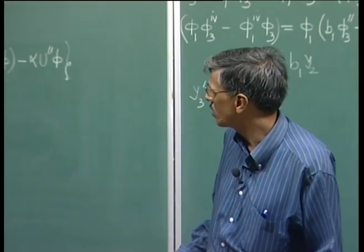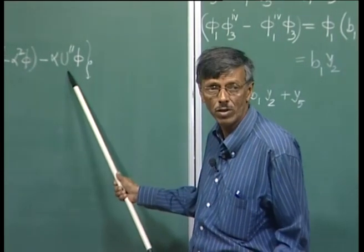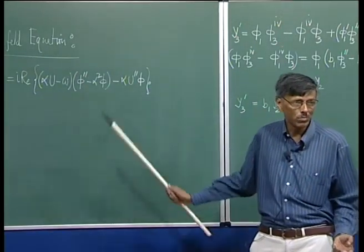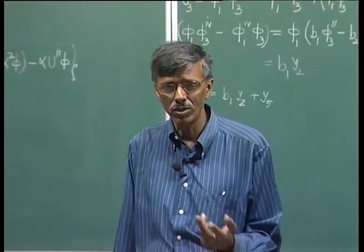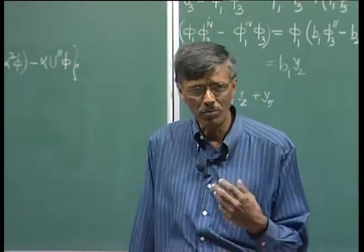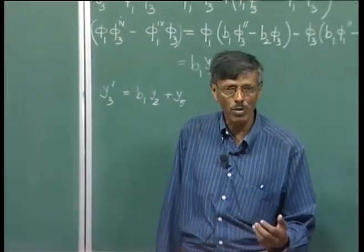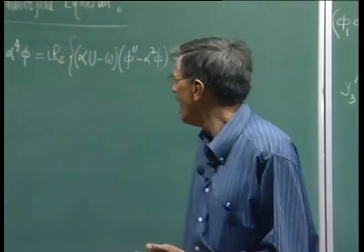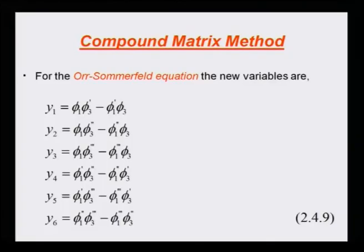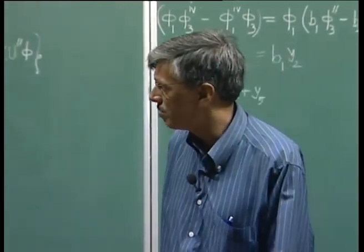You can get some kind of analytical structure of the solution in the far stream, because there u double prime is 0 and capital U is 1. So it becomes a constant coefficient ODE, and we found out there are two viscous modes and two inviscid modes, and in each class one mode grows with y and another decays with y. If we are solving a problem where the disturbance is created inside the shear layer, we would like the disturbance to decay with y, and those are the ones identified as phi_1 and phi_3. We noted that there is a disparity of scale of variation of these two fundamental solutions.